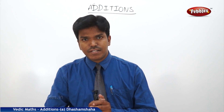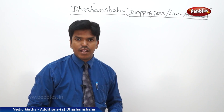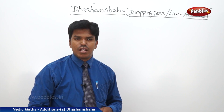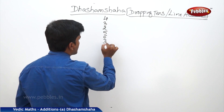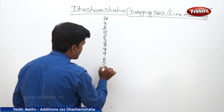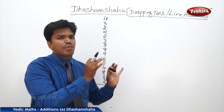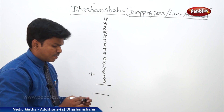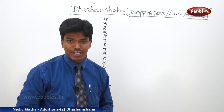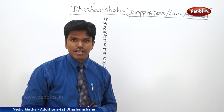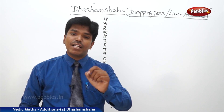Now let us start the additions. In additions, the first concept is Dasamsaha, and the English meaning is 'dropping tens method' or 'line addition.' Let us take one example. So I have given a small problem to you. Now what you need to do is add all these numbers. These many numbers — I know you will feel a little difficult. But in Vedic Mathematics, by using the sutra Dasamsaha, we can do this problem very easily and within very less time.